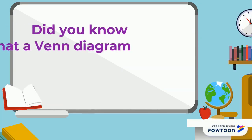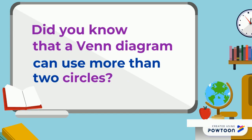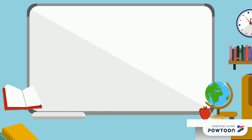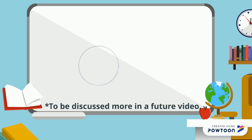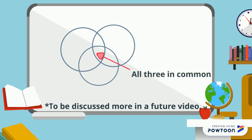Now for the purpose of this video we are introducing the basic concept of a Venn diagram using two circles. But did you know that a Venn diagram can use more than two circles? For example, if you wanted to make a Venn diagram with three things or three circles, you would make sure that they all overlapped, and then the part in the middle is the thing that all three circles have in common.